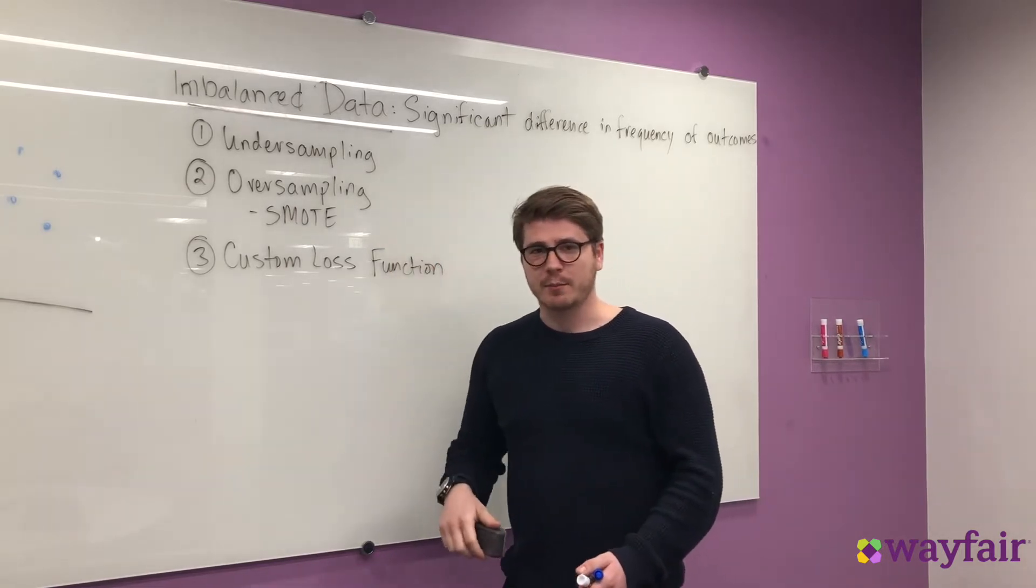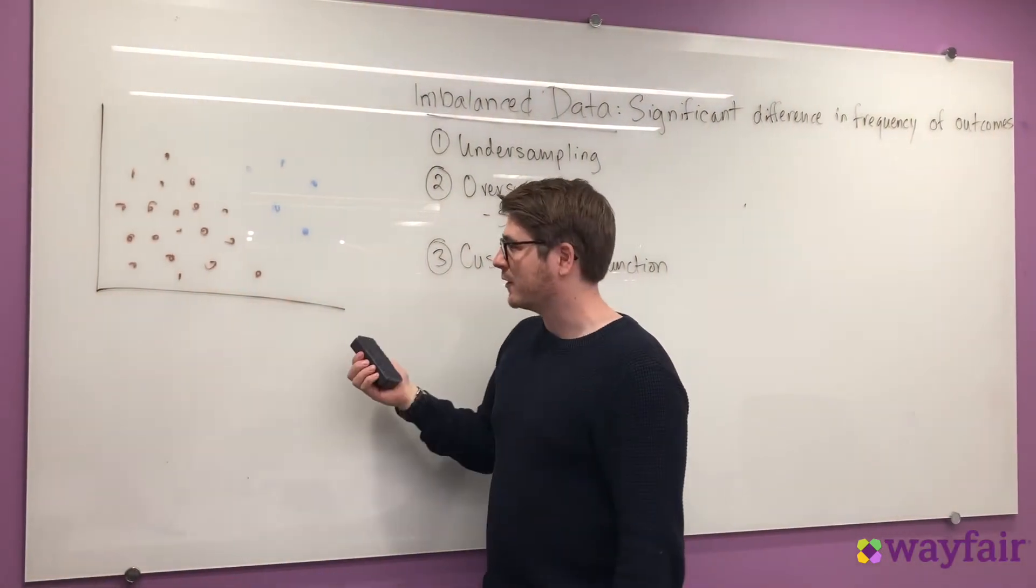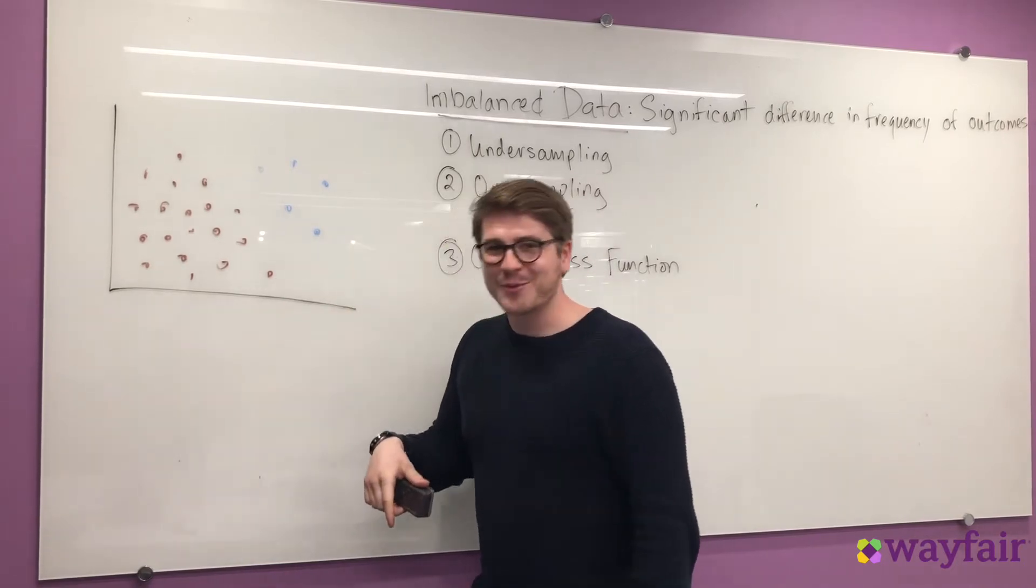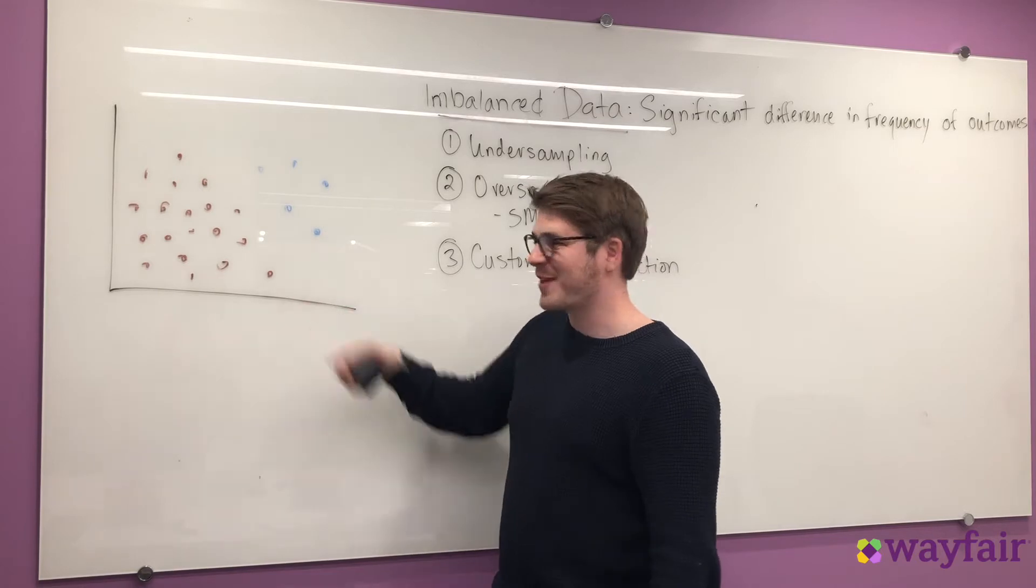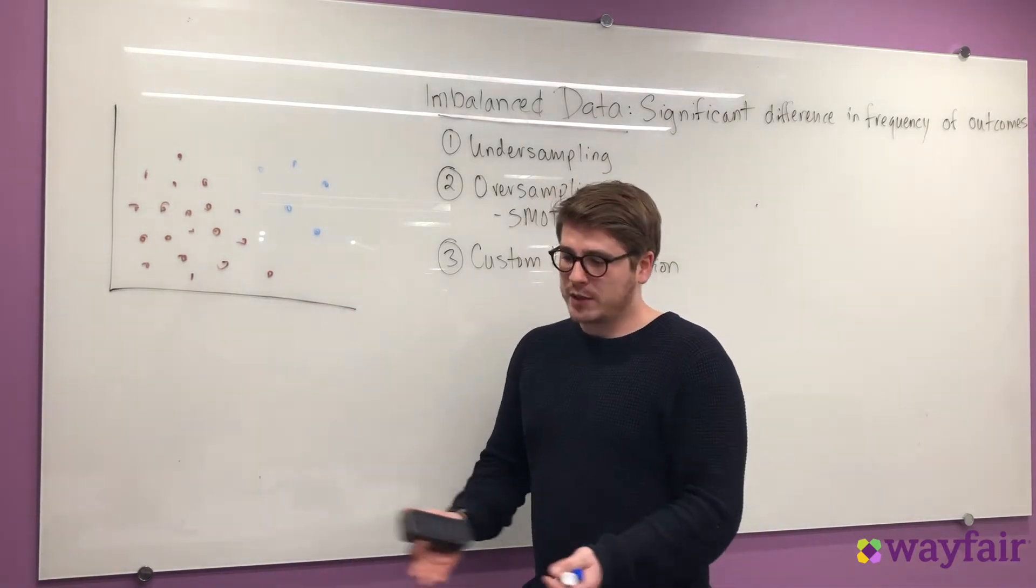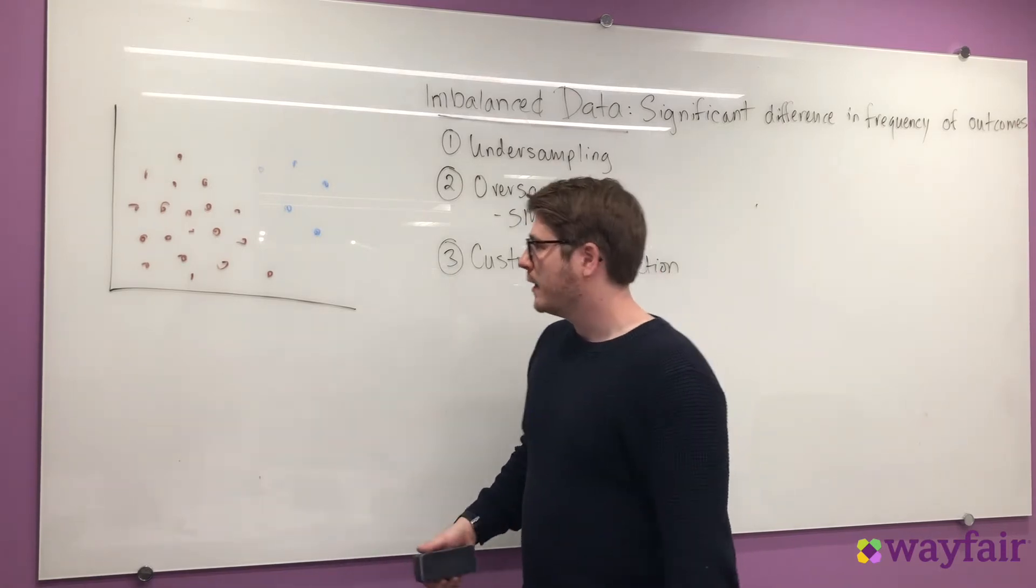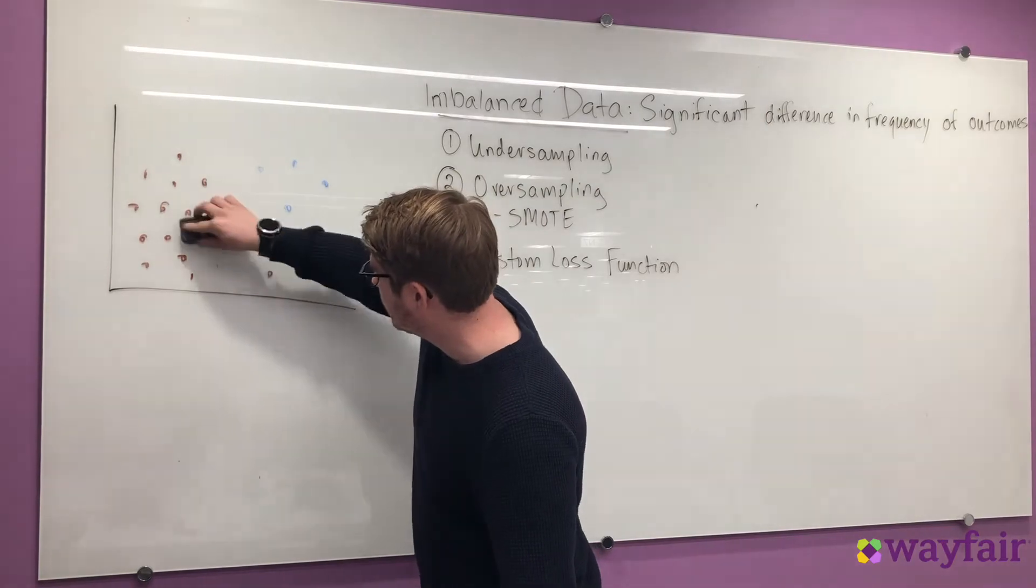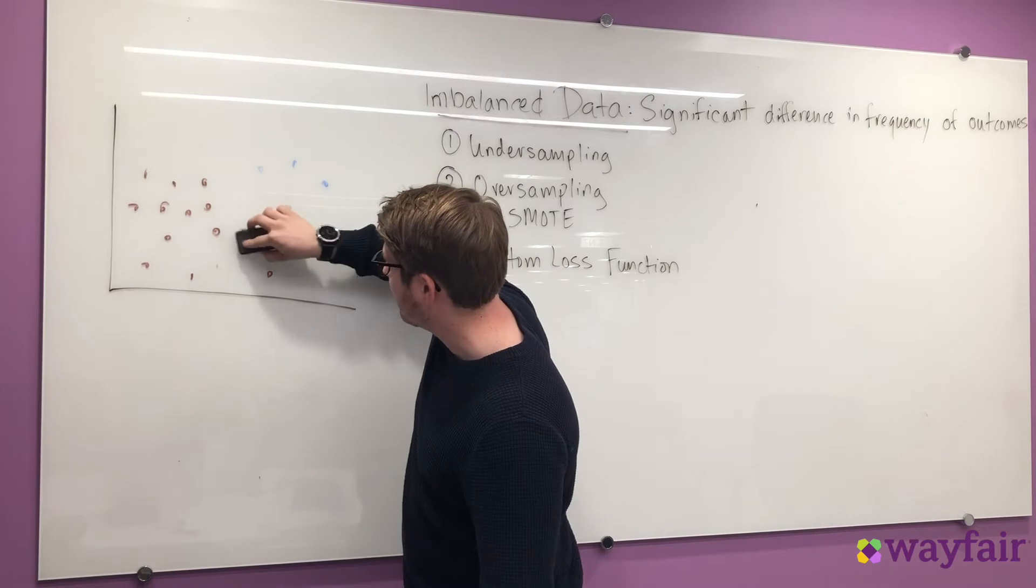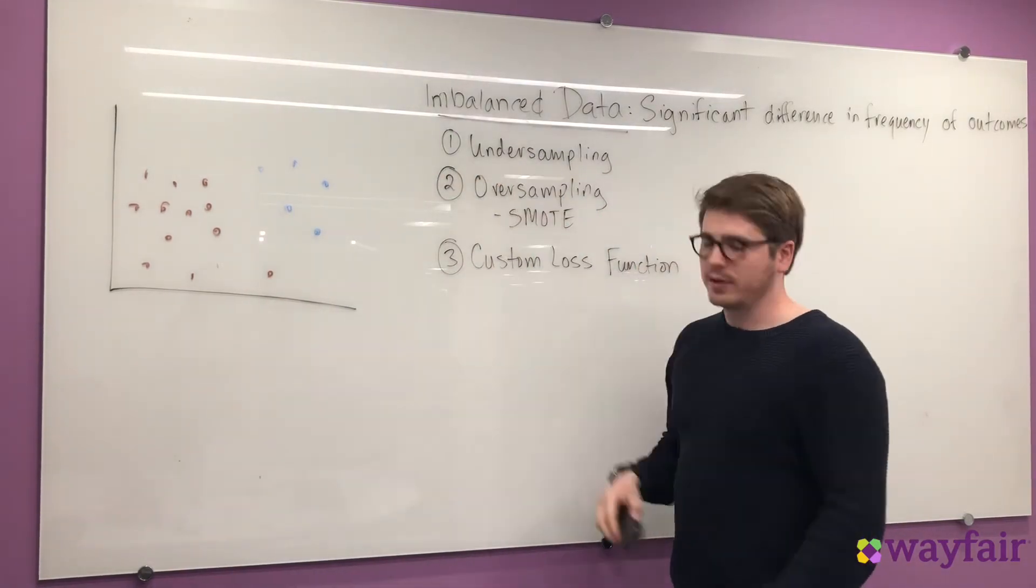First, let's talk about undersampling. So imagine we have an imbalanced data set like this one right here. Blue represents our minority outcome and brown represents our majority outcome. If we have a really big data set and we don't necessarily need to use the entire data set to train our model, then what we can do is remove a portion randomly of our majority outcomes so that we have a much more balanced data set. So this is undersampling.